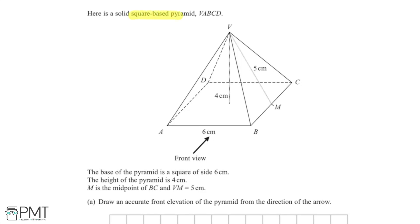Here I'm showing a solid square-based pyramid, which is the diagram below. The base of the pyramid is a square of side 6cm — this length is 6cm, and this length, this length, and this length are also all 6cm because the base is a square. The height of the pyramid is 4cm, so this line from the centre of the base to the top of the pyramid, point V, is going to be 4cm.